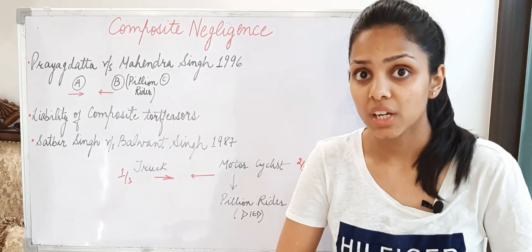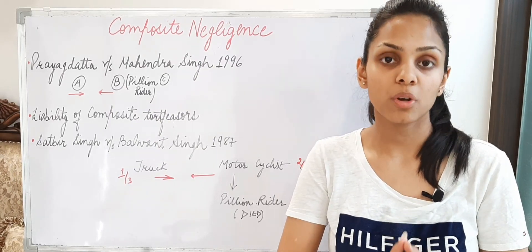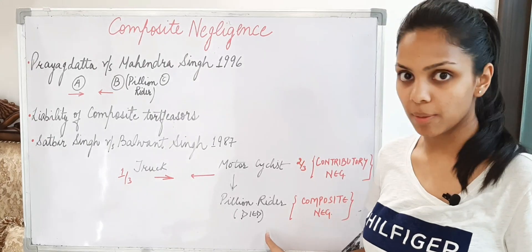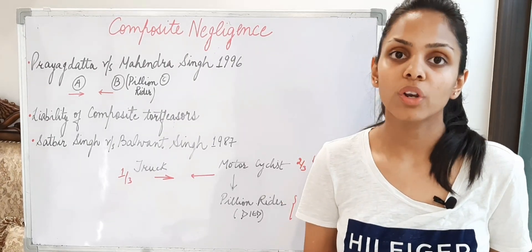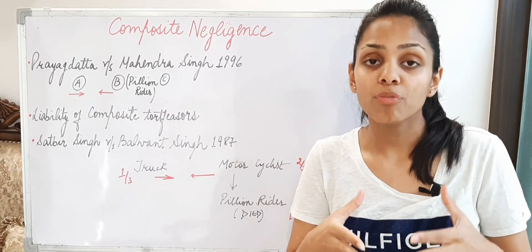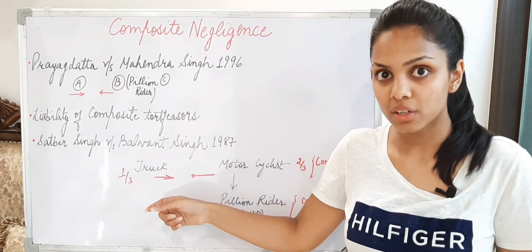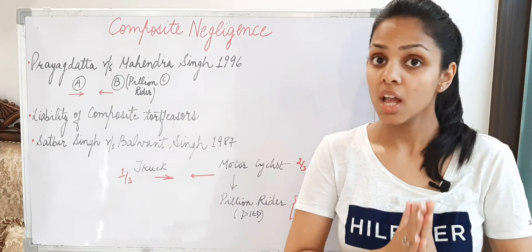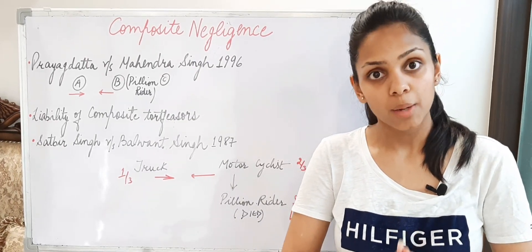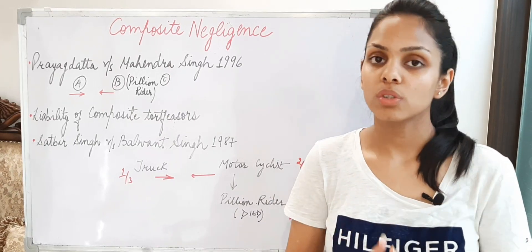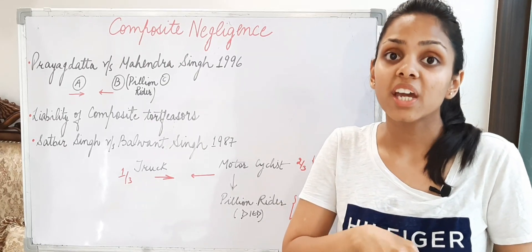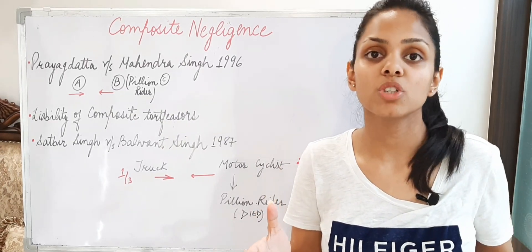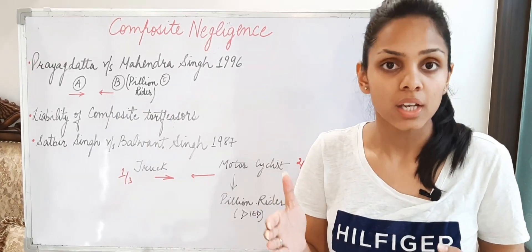But since we are talking about composite negligence, in composite negligence there is no apportionment of damages done by the court. They do not indulge in this matter. So here the deceased's legal representatives — when they claimed compensation — the court said: liability under composite negligence is joint and several. It is your discretion either to sue the truck driver and his insurance company or to sue the motorcyclist. You can sue anyone, claim compensation from anyone — it is at your discretion. Nobody will be allowed to say there should be apportionment of damages. Once, they have to pay the full amount — and after that, subsequent judicial proceedings can be started so as to recover the compensation paid in excess of their liability, because both had liability.